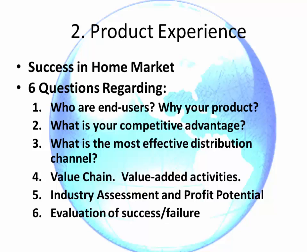What is your competitive advantage? Consider innovation, price, features, quality service, distribution, and your brand equity. Number 3: What is the most effective distribution channel — direct or indirect? Direct would include internet and personal sales. Indirect would be retail, bulk, using an agent, broker, or wholesaler. Number 4: Value Chain — Value Added Activities. What role does a company play in the chain? What value added activities can you perform? What could you outsource? The purpose is to clarify functions to duplicate overseas.